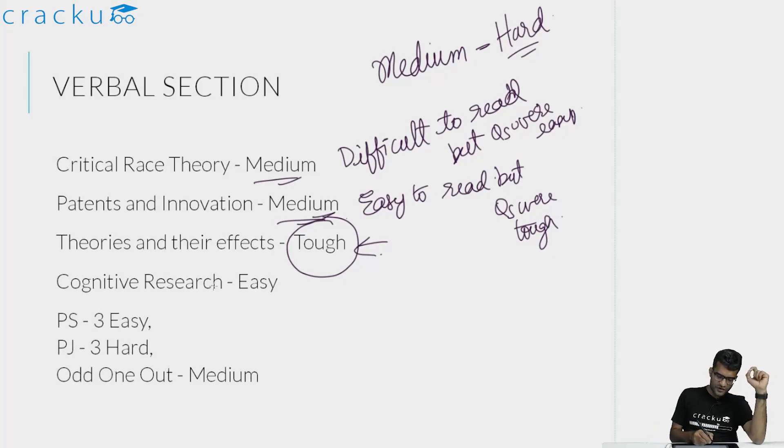The last one was cognitive research. This I felt was the easiest of the four passages. This was also in science and technology, and I felt I could understand what the author was saying. Even the questions were not very difficult. Overall, out of the four passages, I felt this was the passage which was slightly on the easier side.